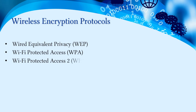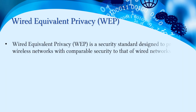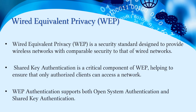Wireless networks use a few protocols, and it's important to understand the encryption protocols used. Basically four types of protocols are used in wireless networks: Wired Equivalent Privacy (WEP), WPA1, WPA2, and WPA3. WEP is a security standard designed to provide wireless networks with comparable security to wired networks. Shared key authentication is a critical component of WEP, helping to ensure only authorized clients can access the network. WEP supports both open system authentication and shared key authentication.